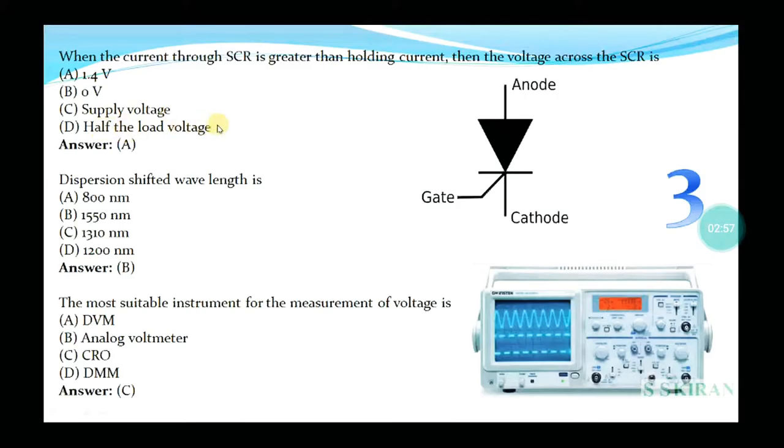When the current through SCR is greater than holding current, then the voltage across the SCR is 1.4 volts or the load voltage. Option is A, 1.4 volts. Dispersion shifted wavelength is 800 nanometers, 1550 nanometers, 100 nanometers, or 400 nanometers? Option is B, 1550 nanometers. See the diagram.